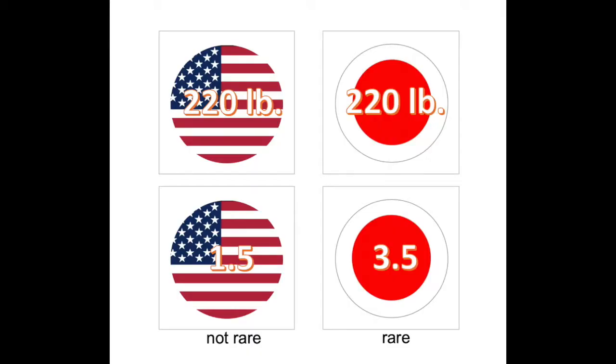If the standard score is about 3, you know that this is a rare value that is on the high side of the average. If the standard score is below negative 3, this is a value that is extreme but on the negative side of the average.